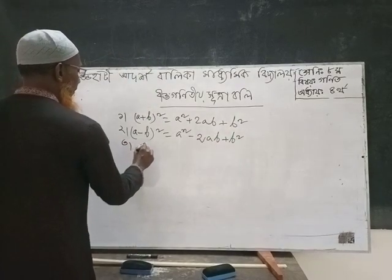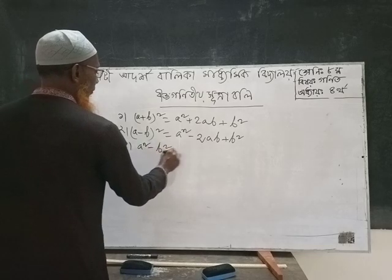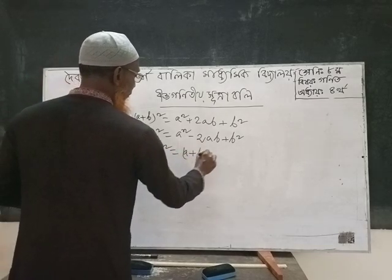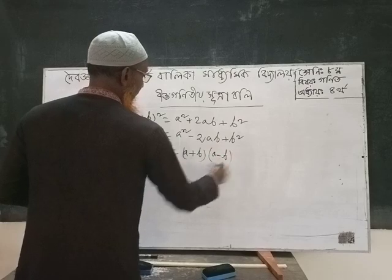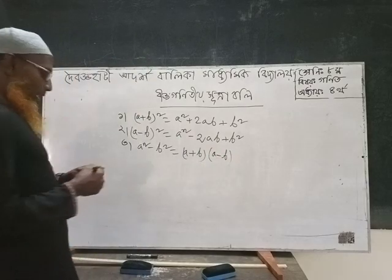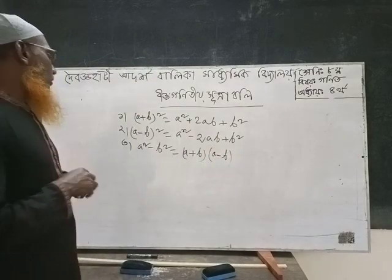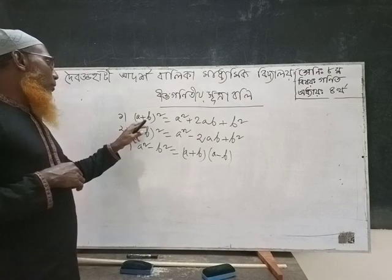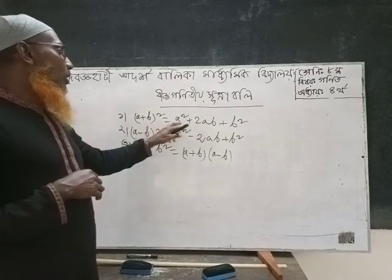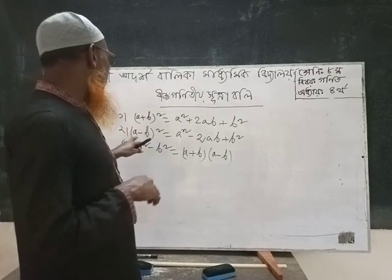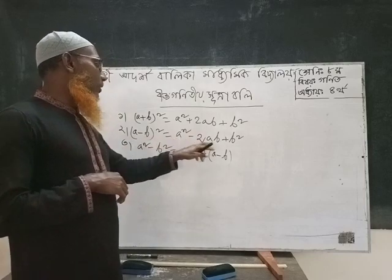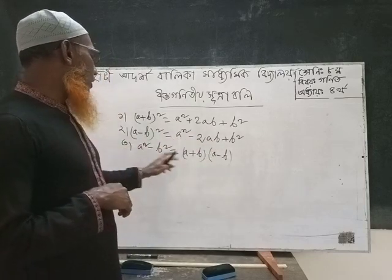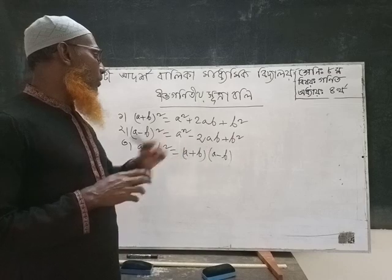A squared minus b squared equals a plus b into a minus b. Also: a squared plus 2ab plus b squared, and a squared minus b squared equals a plus b.